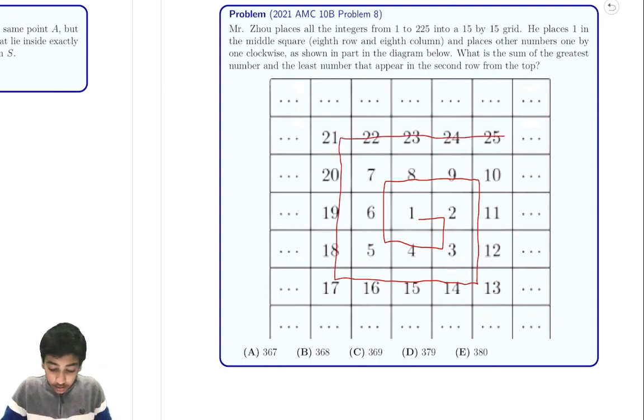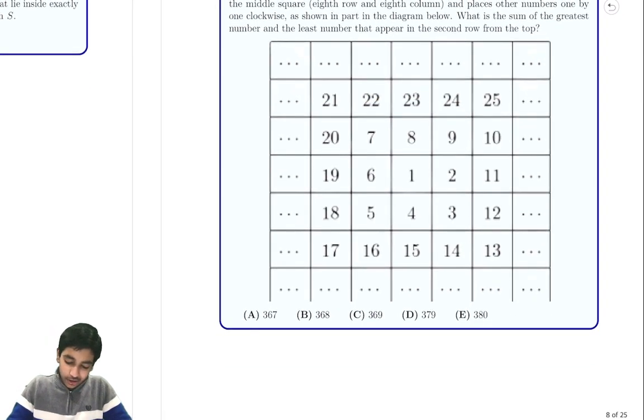And you want to find, but now this is only for a 5 by 5 grid they've shown here. They're saying for a 15 by 15 grid, find the sum of the least and largest number in the second row from the top. So let's just see what this is actually going to look like.